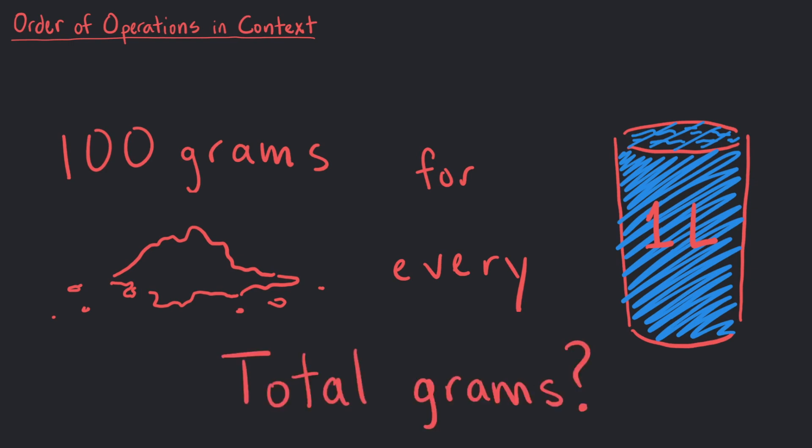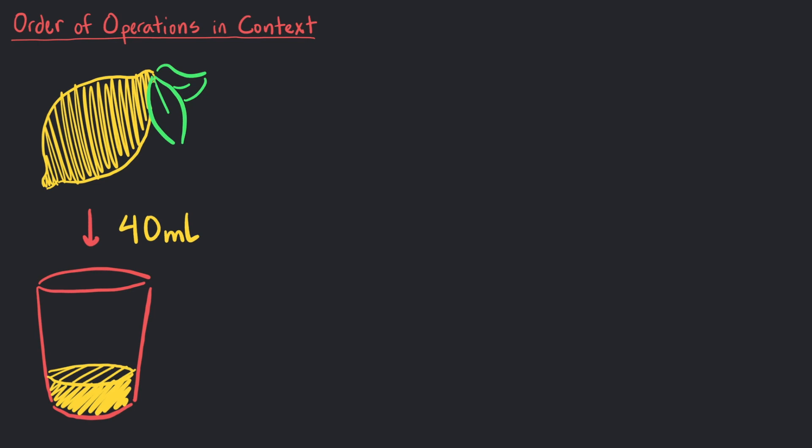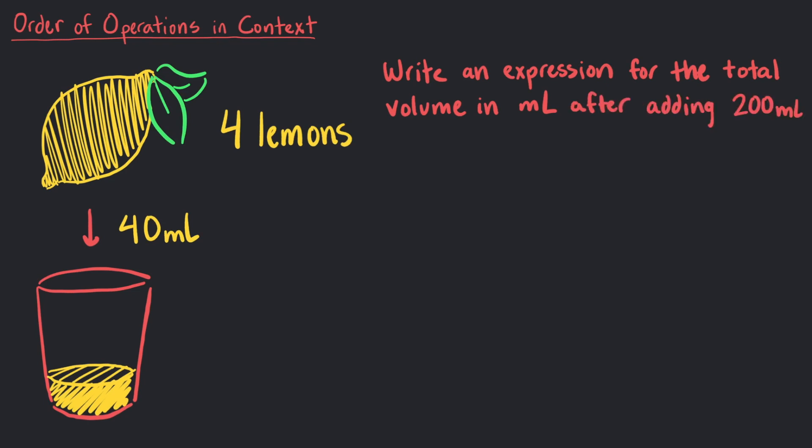Let's take this problem step by step. First, we can find the volume of the diluted lemon juice in milliliters. If each lemon gives 40 milliliters of juice and there are 4 lemons in this recipe, write an expression for the total volume in milliliters after adding 200 milliliters of water.